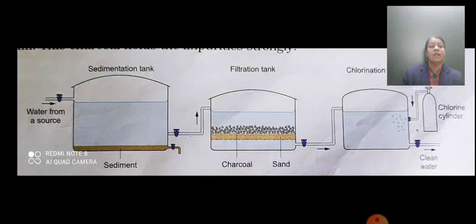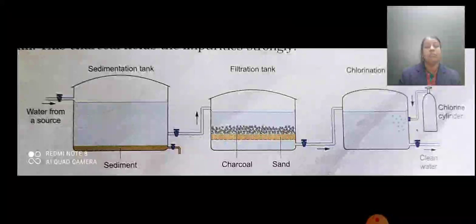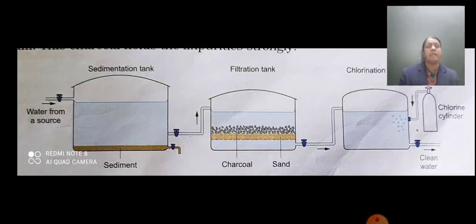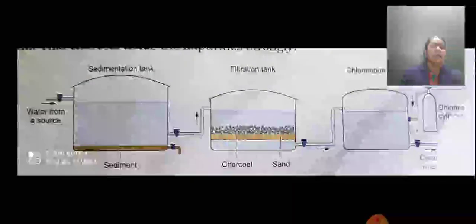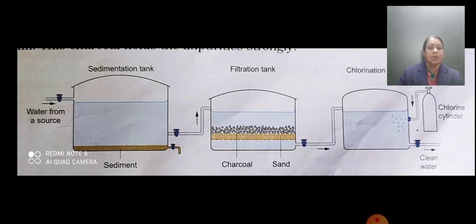The addition of a small quantity of potash alum helps the suspended particles to settle down quickly. The solids that are settled at the bottom of the tank are called sediments. That is why this tank is also called a sedimentation tank.